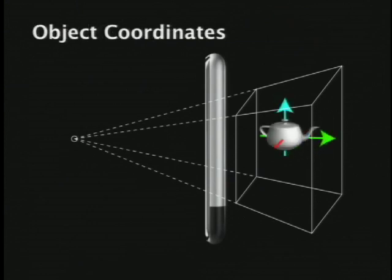The next step is object coordinates — the coordinate space in which the objects are actually defined. When you say draw a triangle at this position, you're doing it about some origin and then translate that object around to put it into world coordinates. That's a lot to take in — there's a demo coming up to make this clearer.